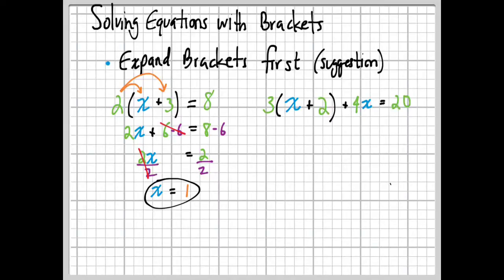Another example: 3(X plus 2) plus 4X equals 20. Now this one, you're much better off to expand the brackets first. Even though it's a suggestion, this one you definitely should expand the brackets first. We're going to do 3 times X and 3 times 2, so we get 3X plus 6 from our distribution, plus 4X equals 20. Nothing happens on the right side yet.